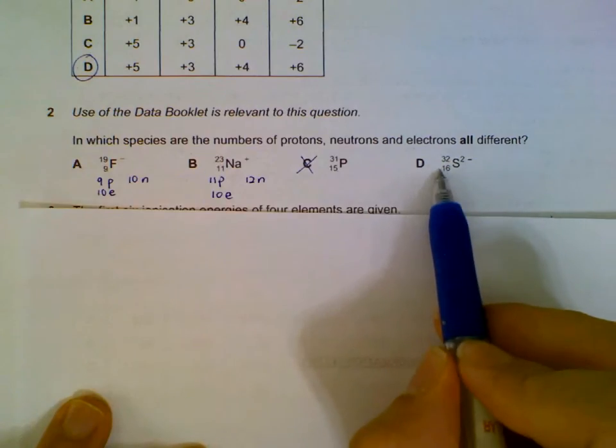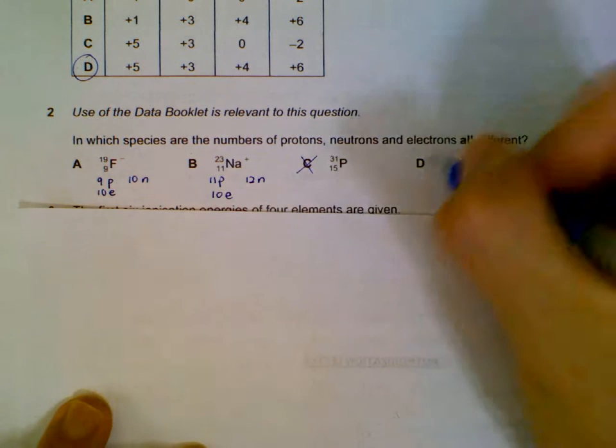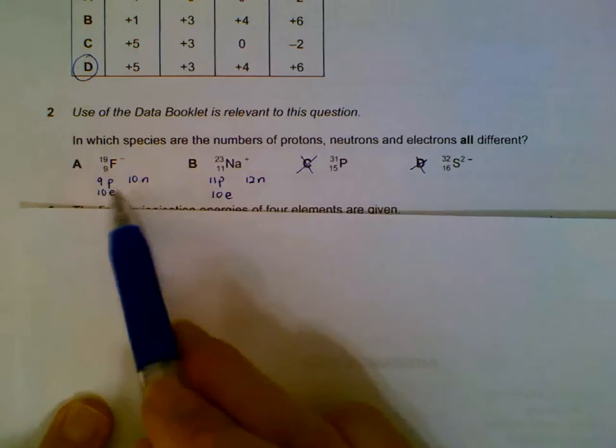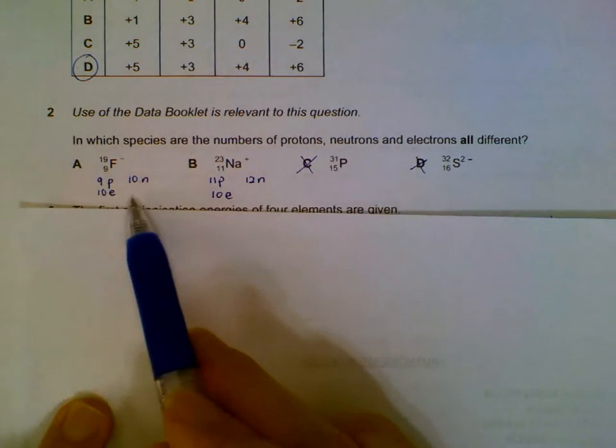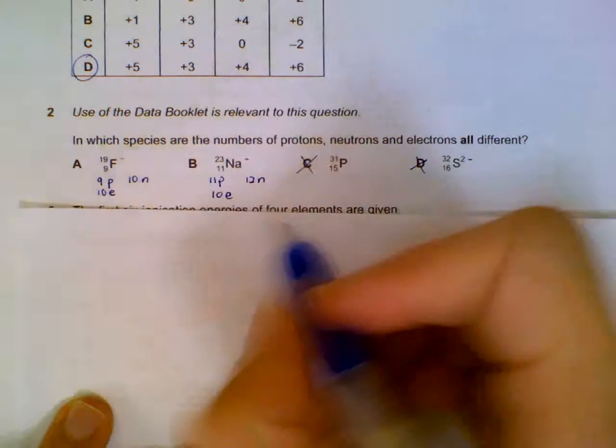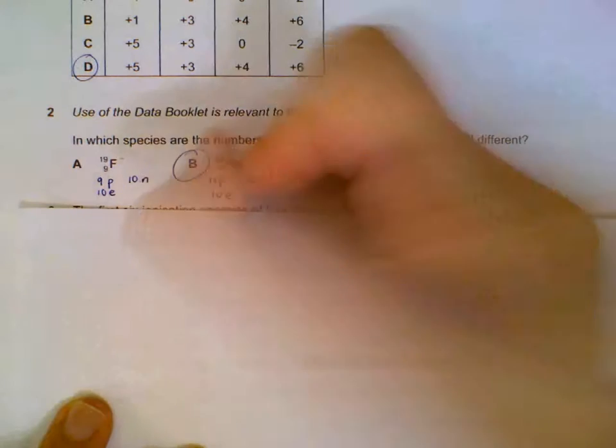You can see that neutrons will be 16 here and protons will also be 16, so D is out. Finally, if we do our calculations, we have protons, neutrons, and electrons for fluorine and sodium plus. It's sodium plus that will have all three species being different.